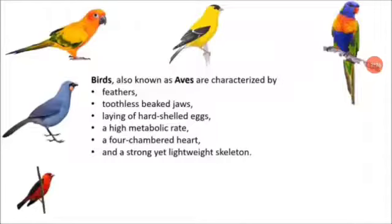Next we see about birds. Birds are also known as aves. Now we see the characters of birds. Birds have feathers, are toothless, have a peaked jaw, lay hard-shelled eggs, have a high metabolic rate, a four-chamber heart — we also have a four-chamber heart — and a strong yet lightweight skeleton. These are the characteristics of birds.